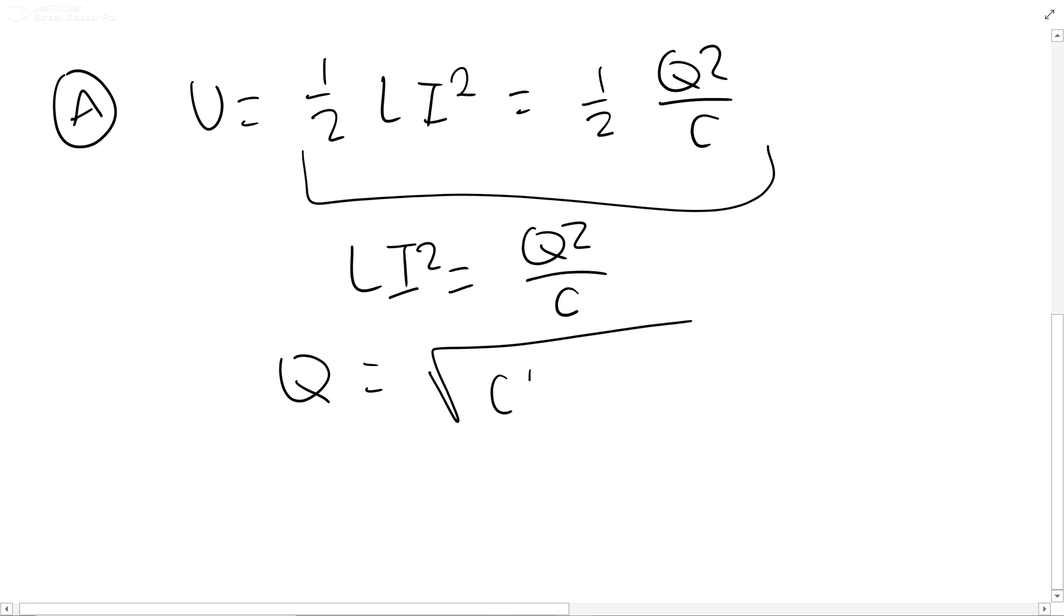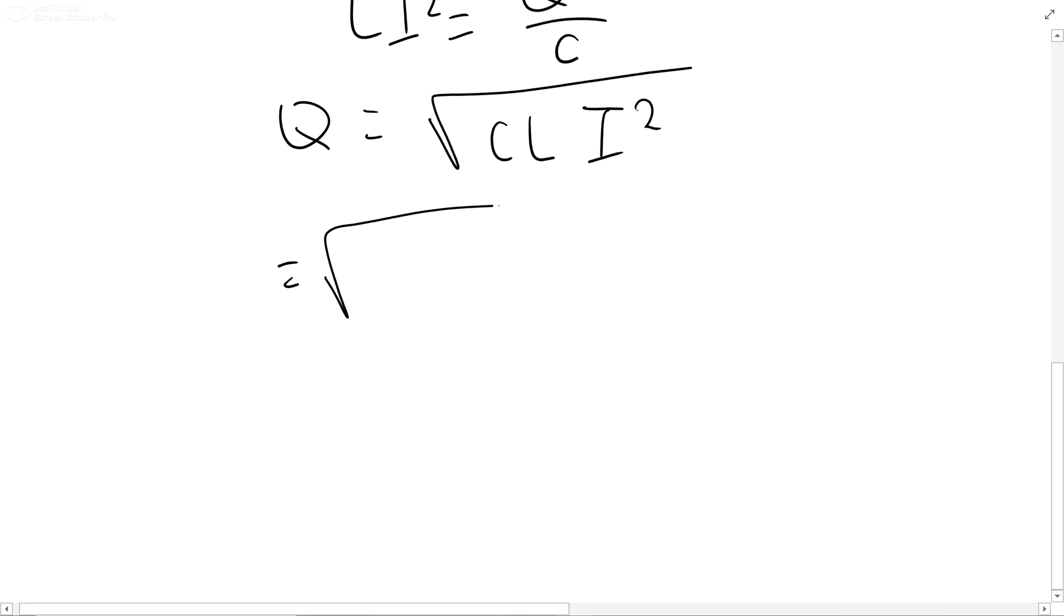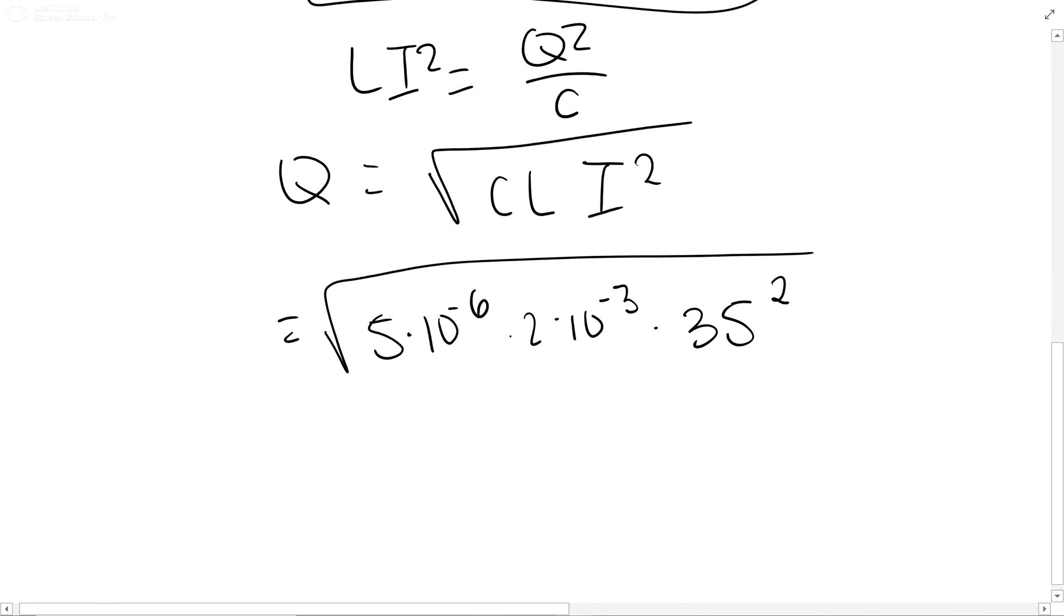So set Q equal to square root of CLI squared, and plug in your numbers. Make sure you watch your units like always, 3.5 not 35.